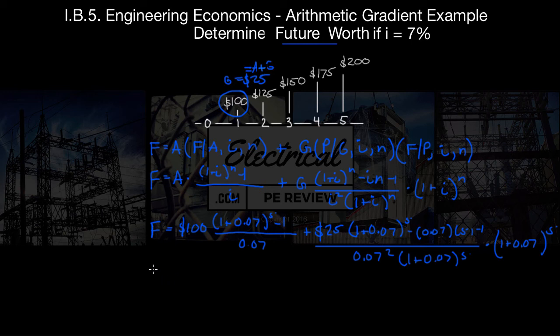Let's plug this in our calculator and see what we get. We've got F equals $100 times 5.75 plus $25 times 7.65 times 1.40.